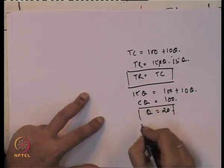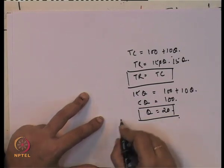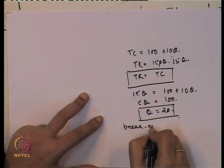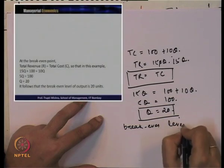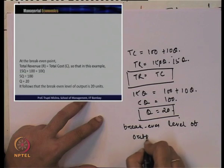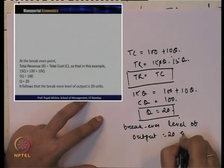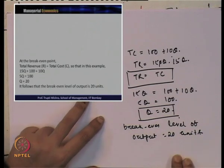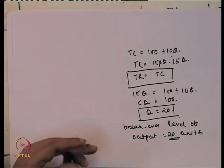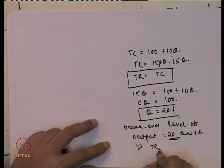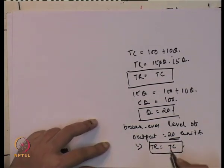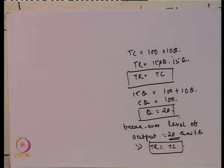Q = 20 units is achieved when total revenue equals total cost. Break-even is achieved at the point where total revenue equals total cost, giving a break-even output level of 20 units — derived through the equalization condition that total revenue equals total cost.